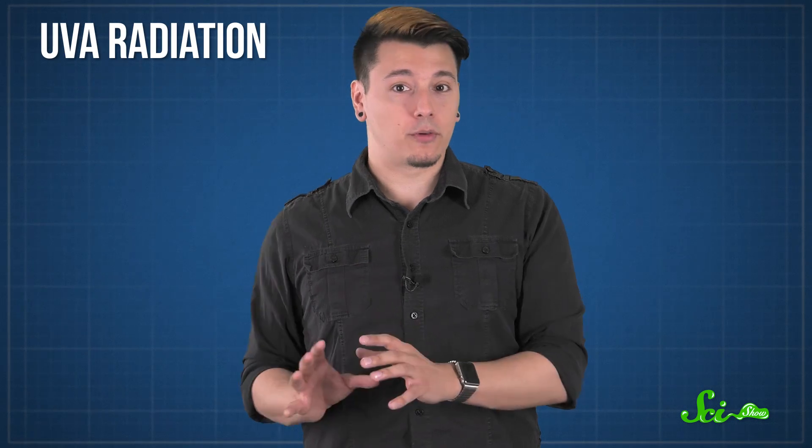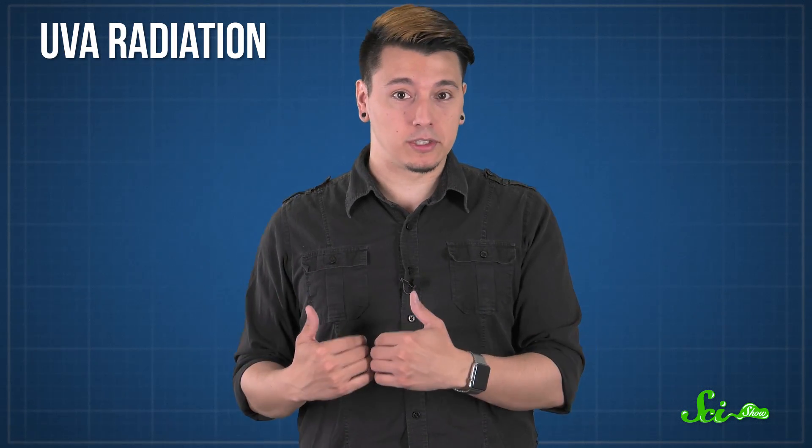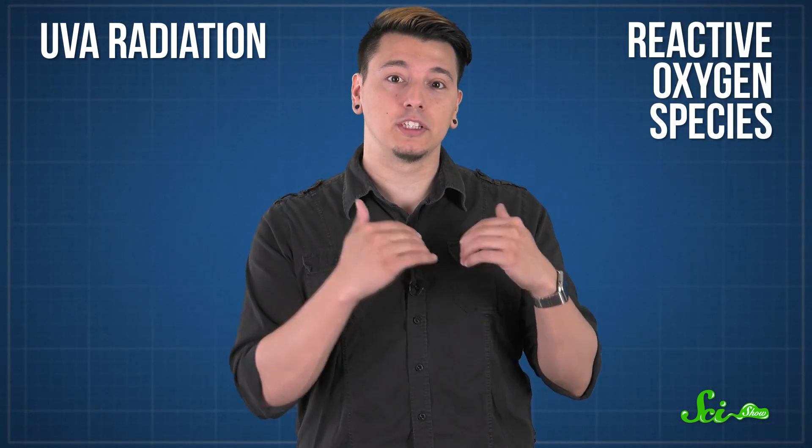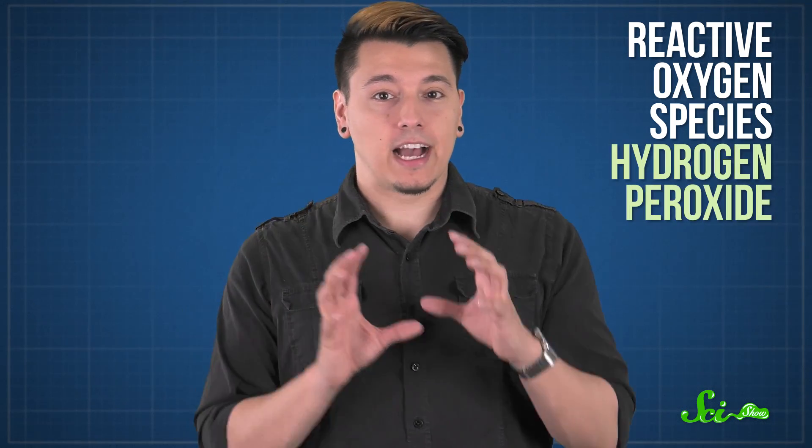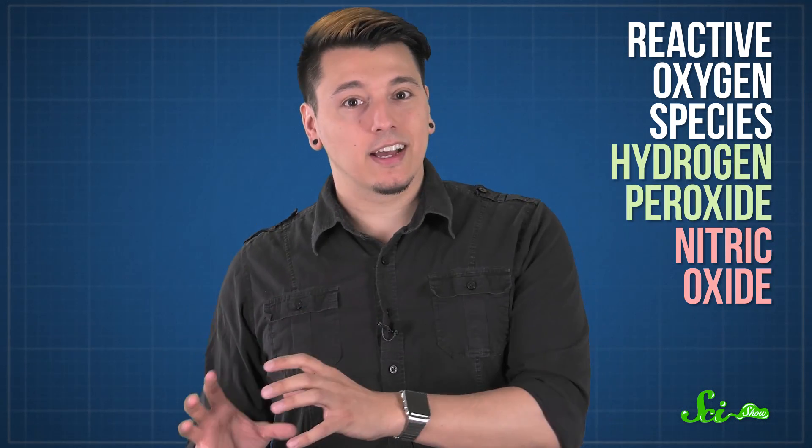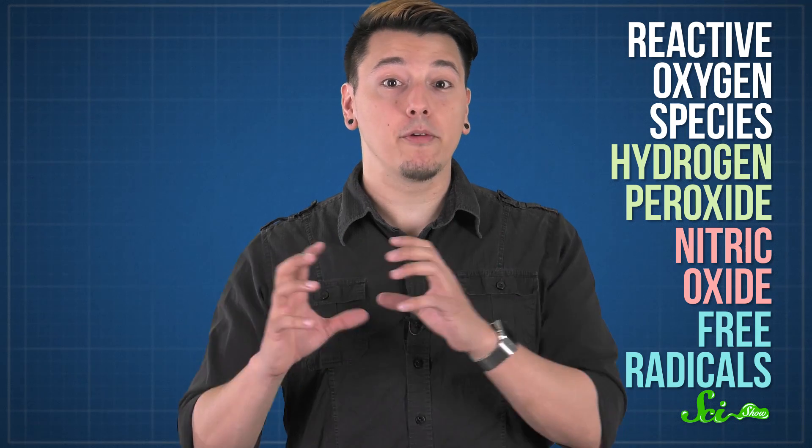Lots of UVA radiation is also not great for you, because it interacts with other molecules in your skin to create reactive oxygen species. Reactive oxygen species include things like hydrogen peroxide, nitric oxides, and unstable molecules called free radicals, the rebellious teenagers of the molecular world.